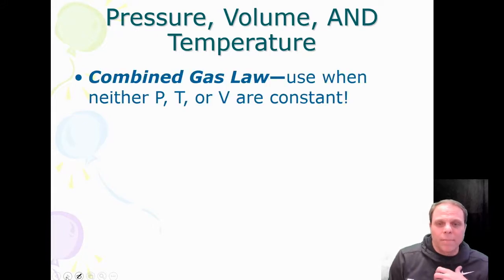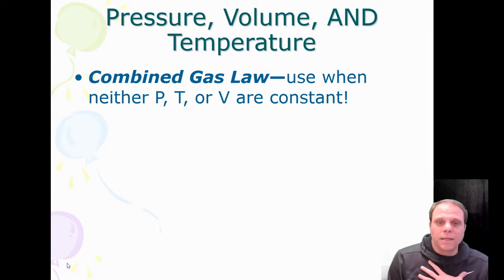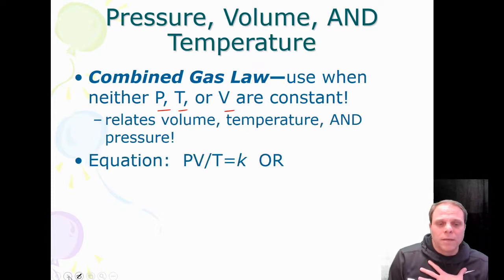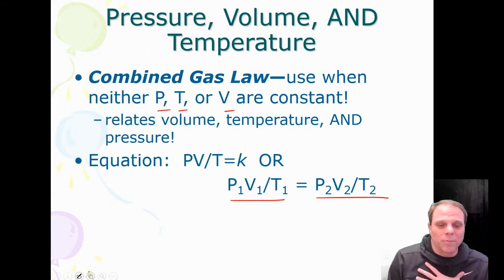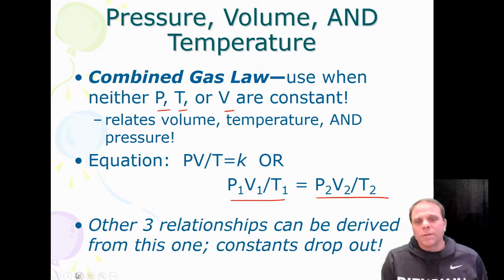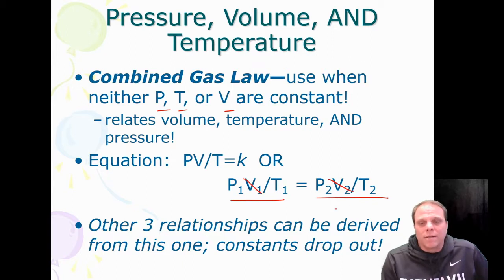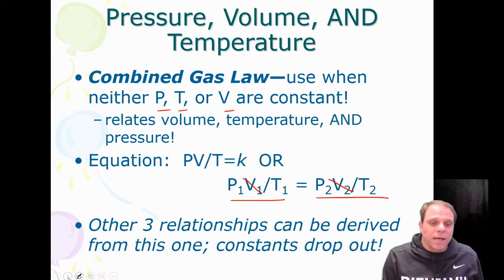Now let's do the combined gas law, which combines Boyle's Law, Charles's Law, and Gay-Lussac's Law — putting pressure, temperature, and volume all together. The formula is P1V1/T1 = P2V2/T2. If none of the variables are constant, use this law. The other three laws can all be derived from this one — anything held constant simply drops out. You can always use the combined gas law and just ignore the constant variable.